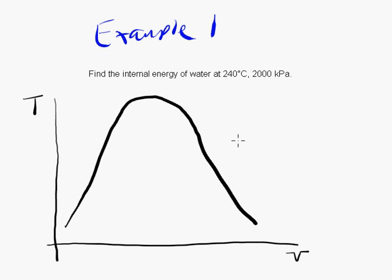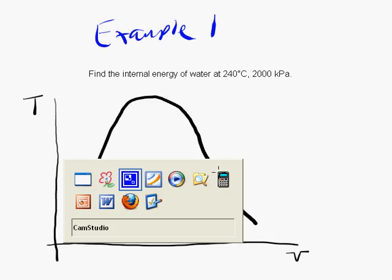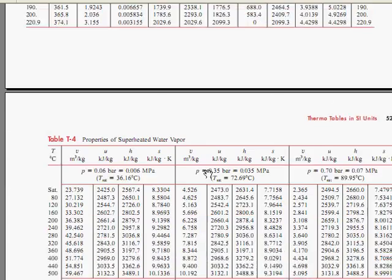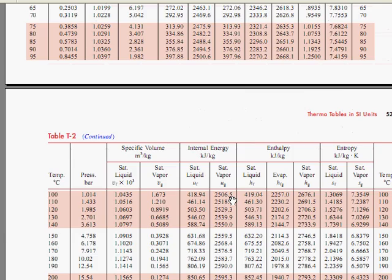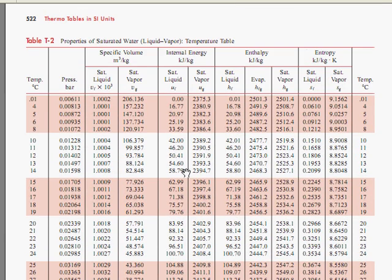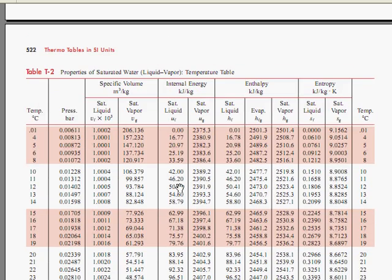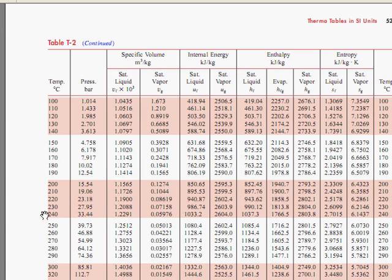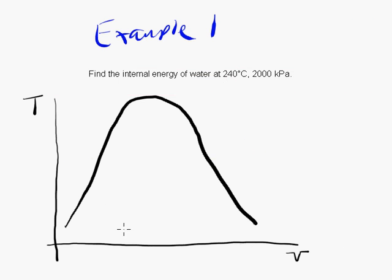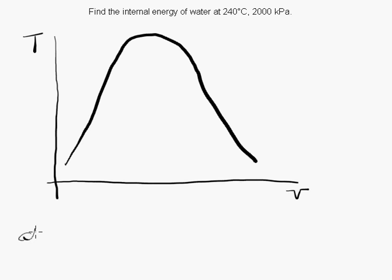So we're at 240 Celsius, 2,000 kilopascals. The first thing we do is go to the saturated water table in order to get a handle on where we are. We've got the saturated water pressure table and the saturated water temperature table. We know both the temperature and the pressure in this particular problem, so it doesn't really matter which one we look at. Let's look at the temperature table. We go down to 240 Celsius and we find that the saturation pressure is 33.44 bar. PSAT is 33.44 bar, which in kilopascals is going to be 3,344 kilopascals, because a bar is 100 kilopascals.